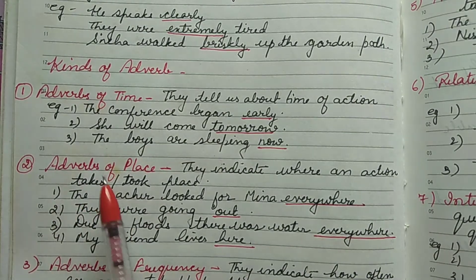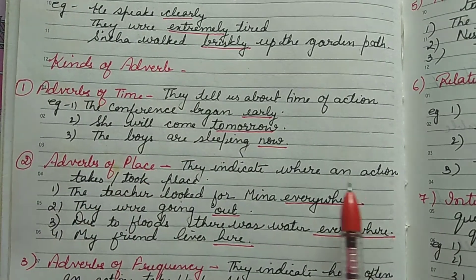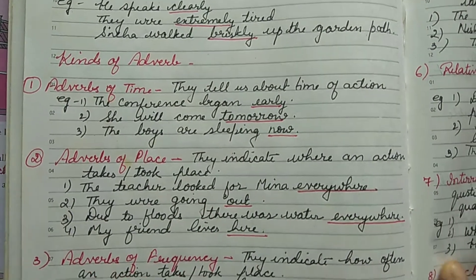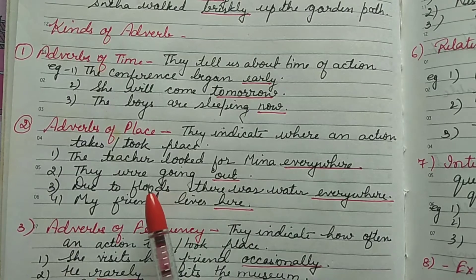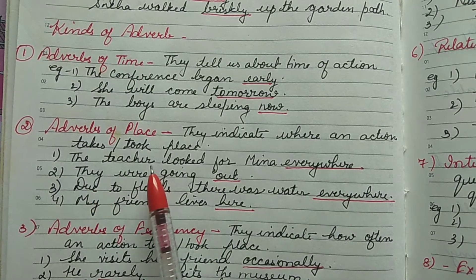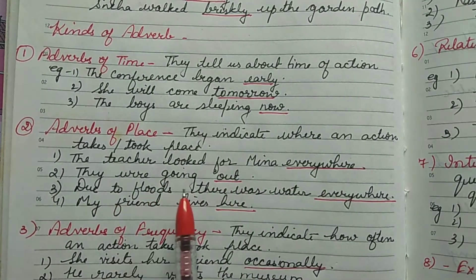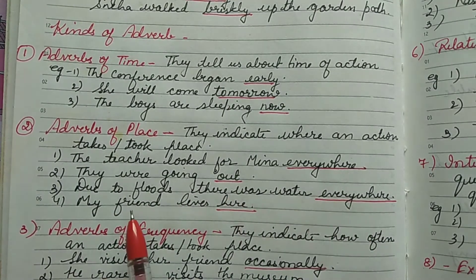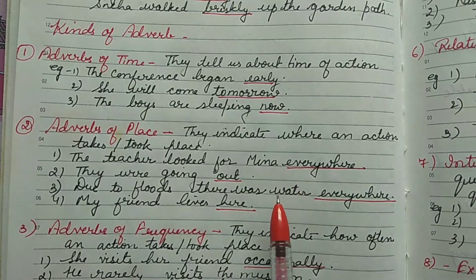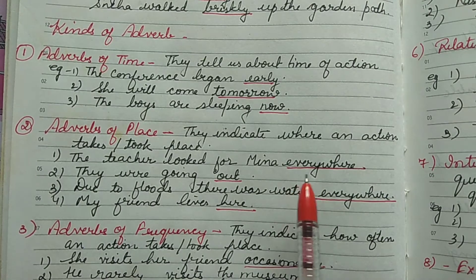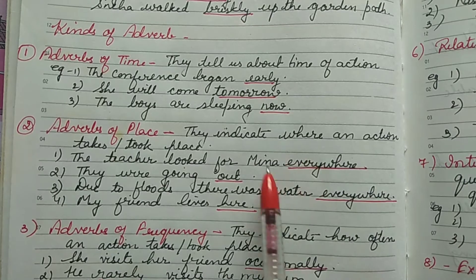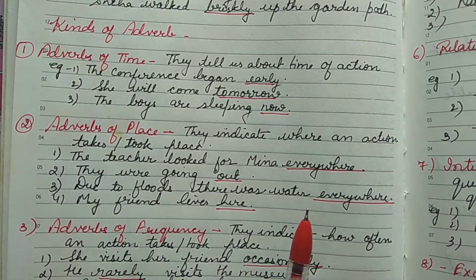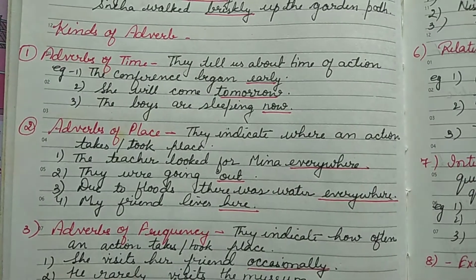Next is adverb of place, which indicates where an action takes or took place. Examples: 'The teacher looked for Mina everywhere.' 'They were going out.' 'Due to flood there was water everywhere.' 'My friend lives here.' So here, everywhere, and out all indicate the location where the action happened — these are adverbs of place.